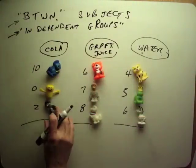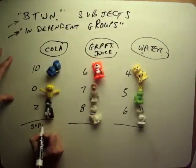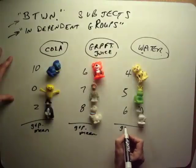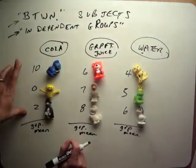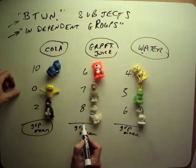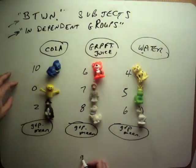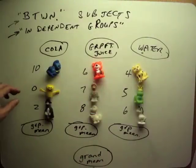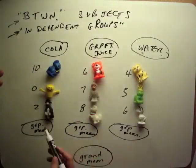Now, the two kinds of variability to think about. Starting with between-groups variability: for each group you compute a group mean by adding up the scores and dividing by how many are in the group — so 10 plus 0 plus 2 divided by 3 gives the cola group mean. Between-groups variability is how far apart the groups are, measured by how far they are from the grand mean — the center of the whole study. You get the grand mean by adding all the data and dividing by 9 in this case.